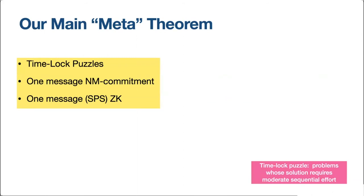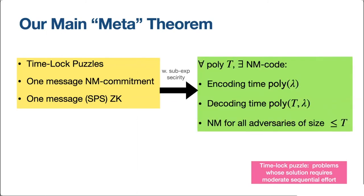A time-lock puzzle is a method to create puzzles that are easy to create but require some moderate polynomial sequential effort to solve. Even if the adversary has many processors running in parallel, it generates problems that are still hard to solve as long as the sequential running time is below some predefined bound. Using these three primitives with sub-exponential security, for any polynomial t, we obtain a non-malleable code where encoding takes time polynomial in the security parameter λ, decoding takes time polynomial in t and λ, and we guarantee non-malleability for all adversaries of size at most t.